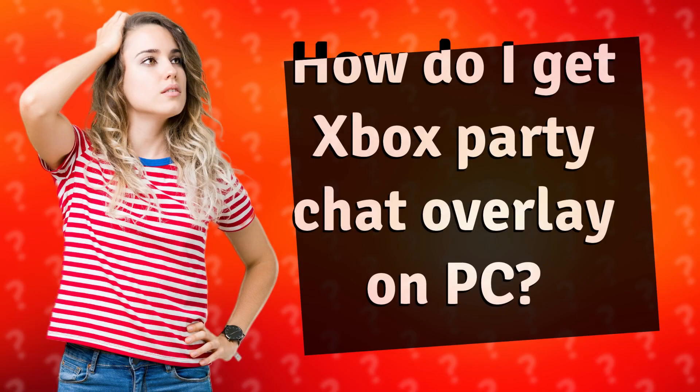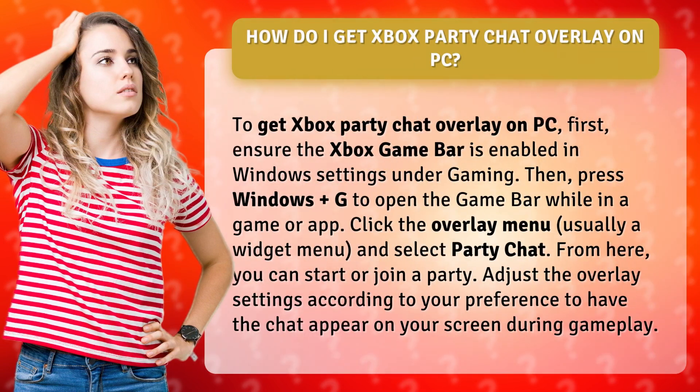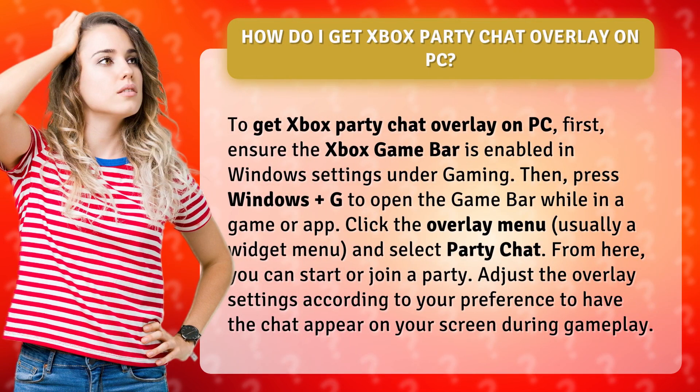How do I get Xbox Party Chat Overlay on PC? To get Xbox Party Chat Overlay on PC, first ensure the Xbox Game Bar is enabled in Windows Settings under Gaming. Then press Windows + G to open the Game Bar while in a game or app.